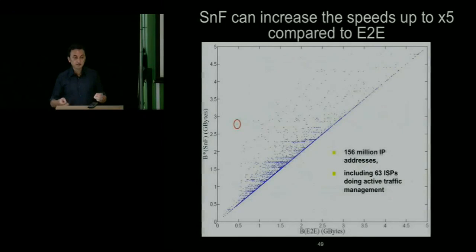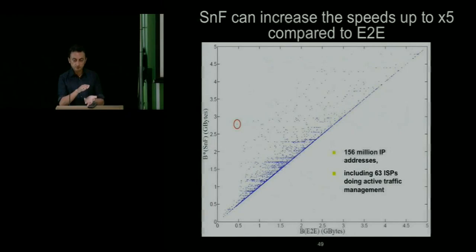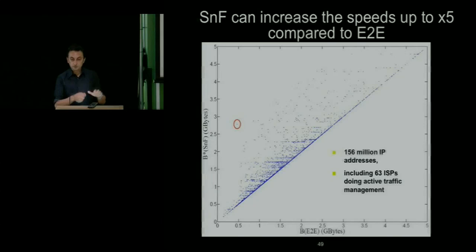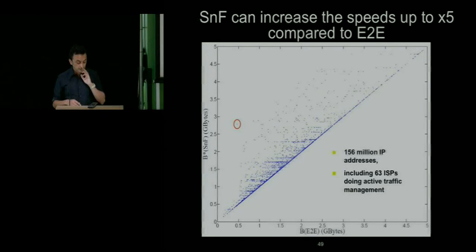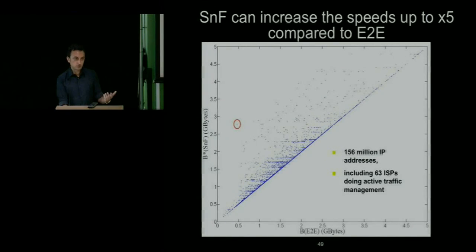Using data collected from this tool — the available capacity a BitTorrent user sees across different ISPs — we calculated the speed increase if they used an internet postal service for transfer across the roughly 60 ISPs doing active traffic management. All dots above the line mean the speed can actually increase versus regular BitTorrent, and we found speed improvements of up to five times.